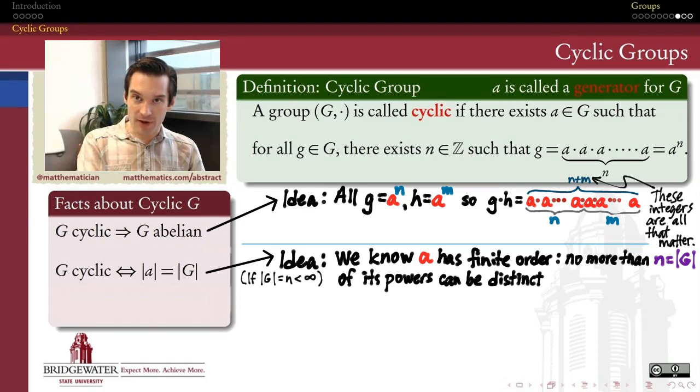Which in the beginning feels like a very obvious fact, but when you sit down to try to prove it, there's a little bit more to say. For example, suppose that my group has finite order, so the order of G is N, and that's a finite number.